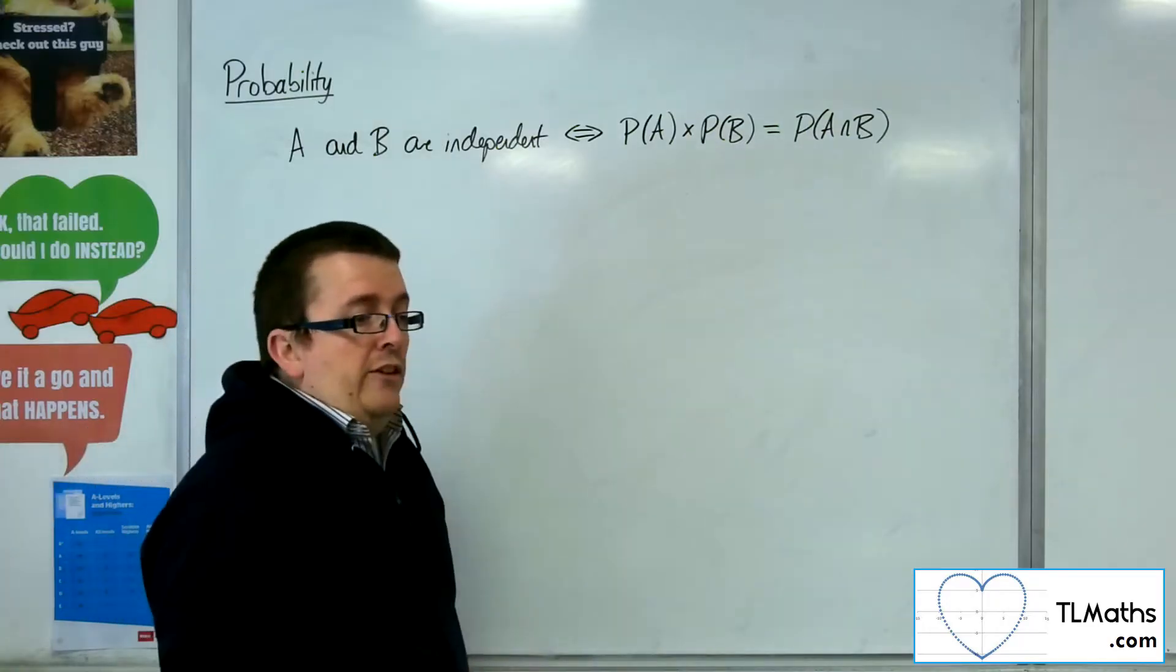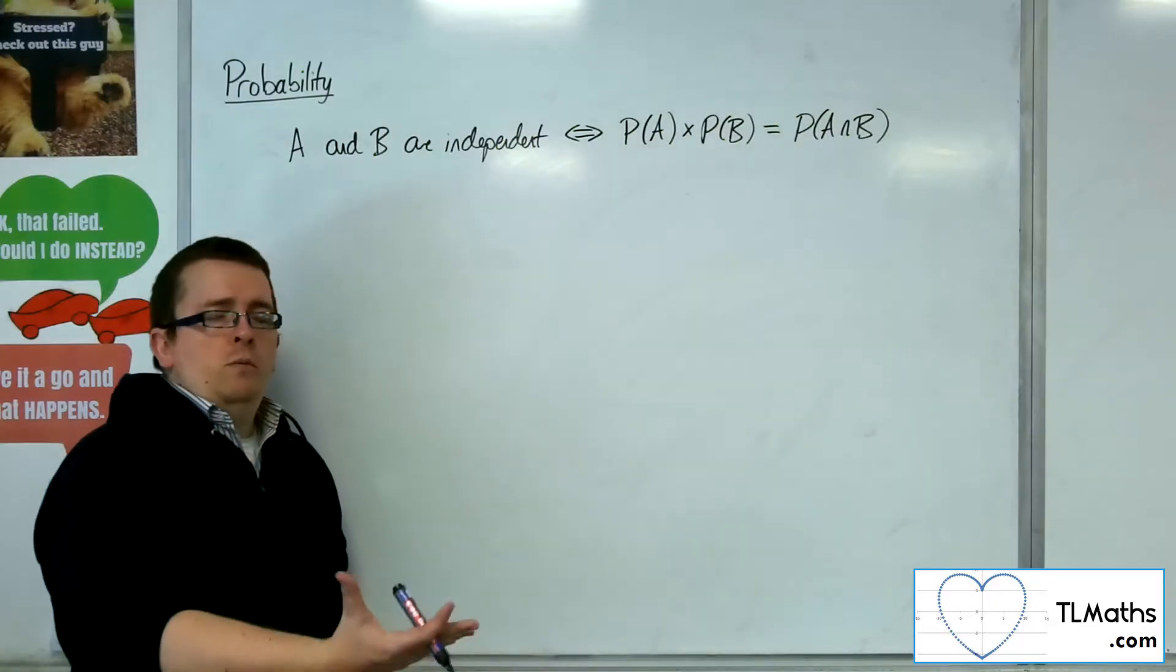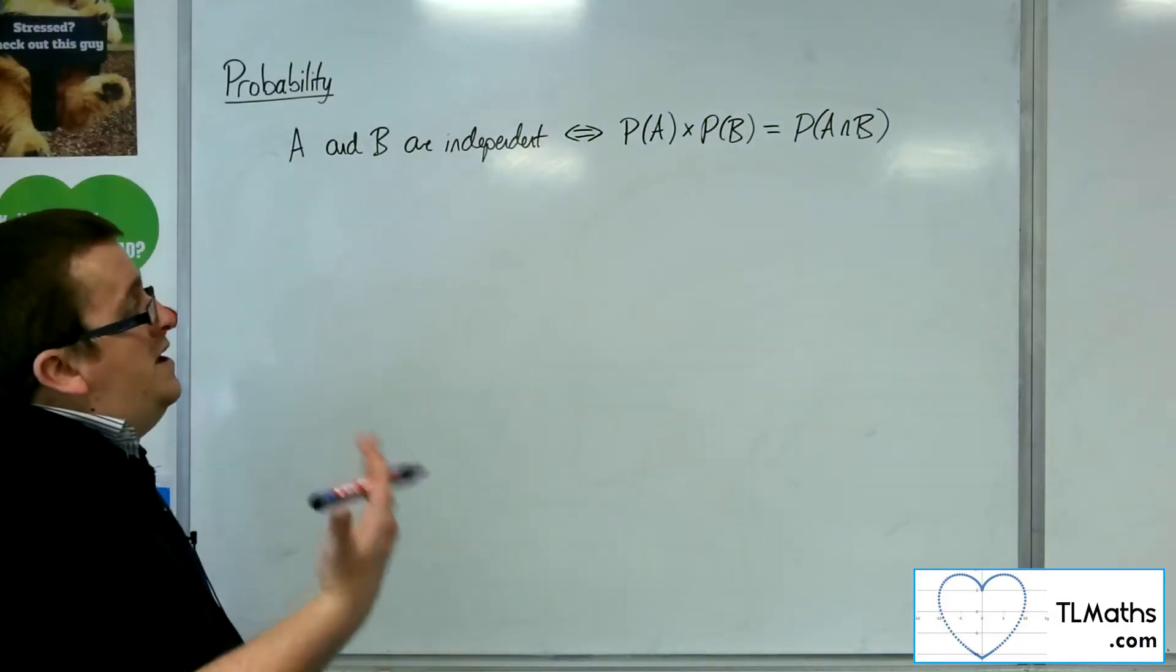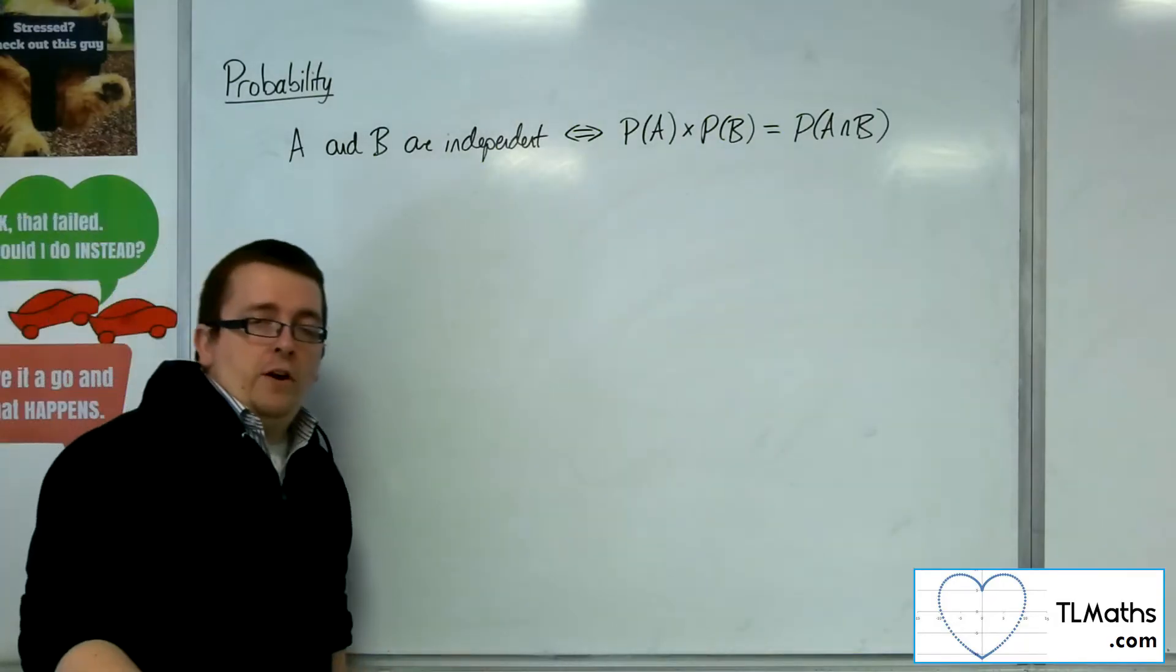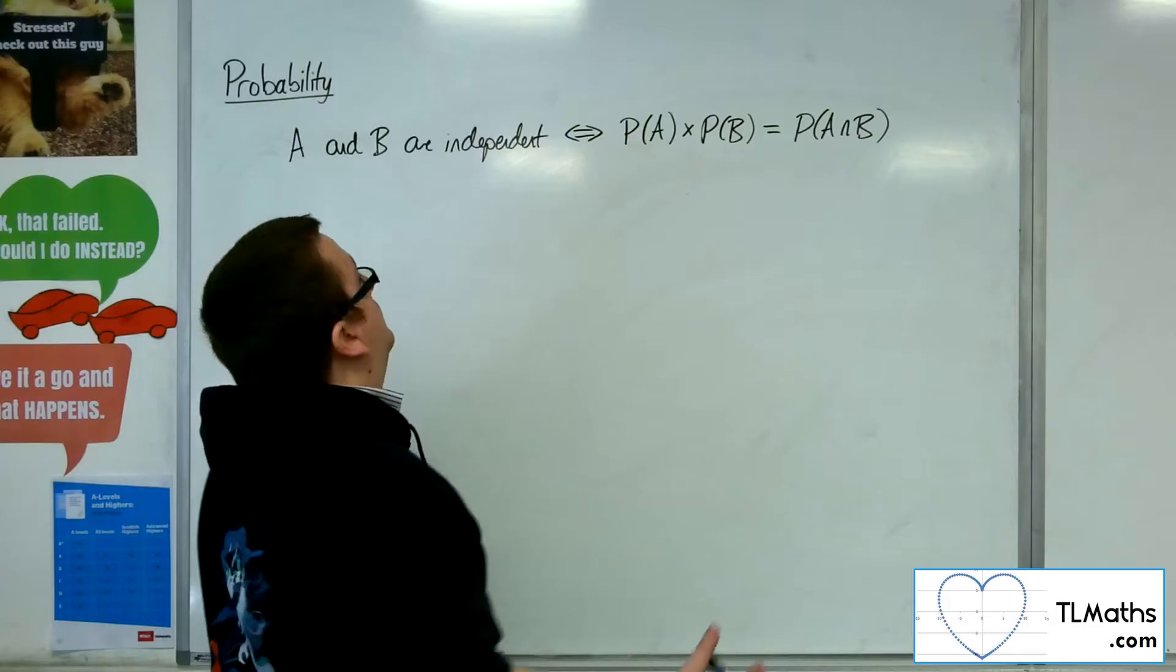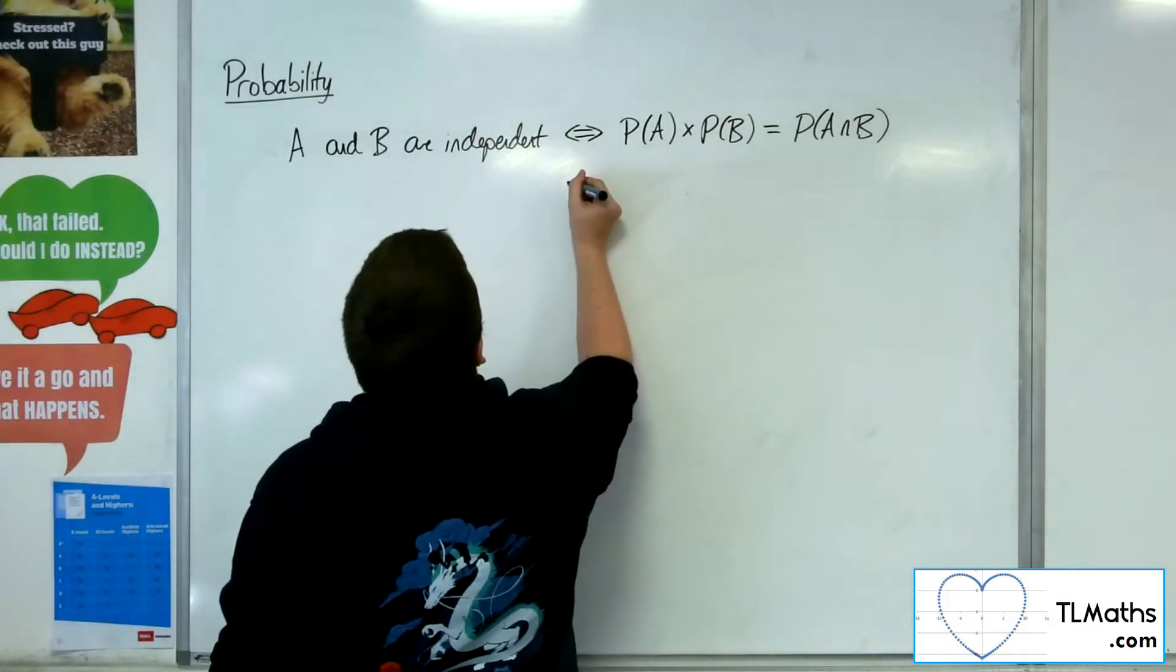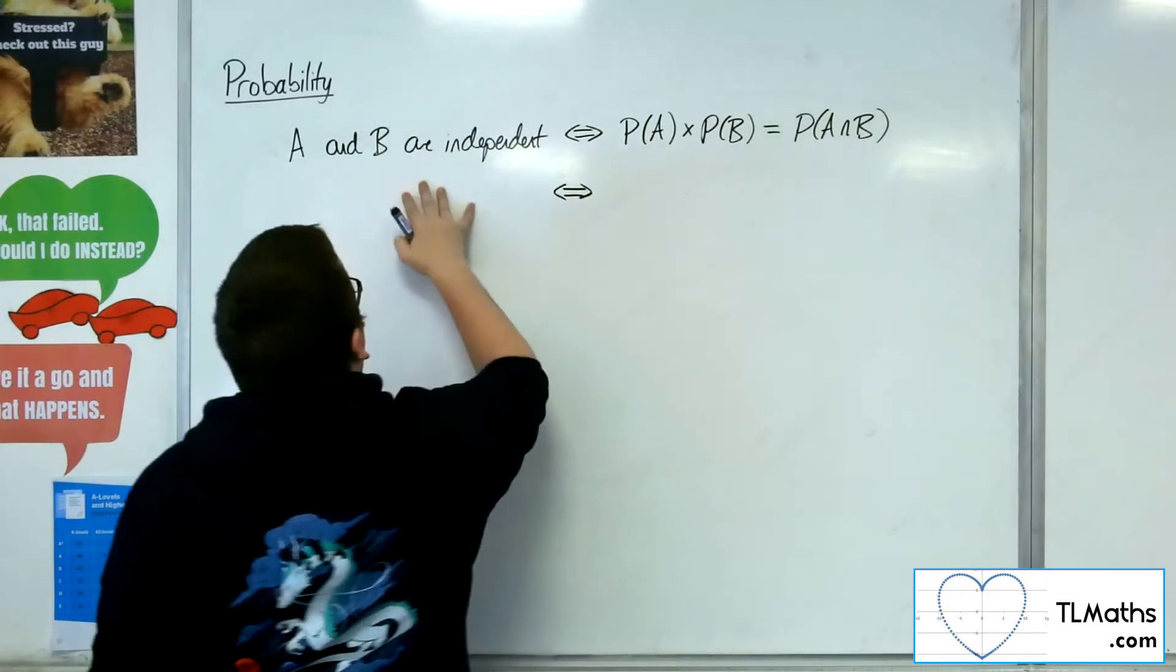Now, seeing as we've just covered conditional probability, we now have another way of identifying whether two events are independent. And so what we can say is that two events, A and B,